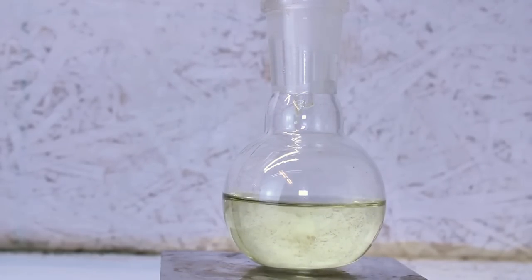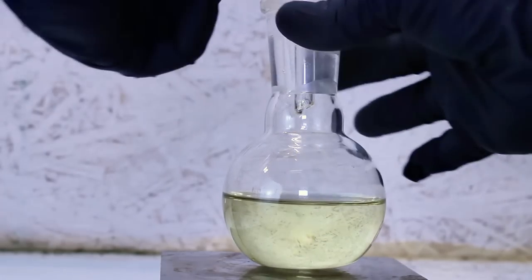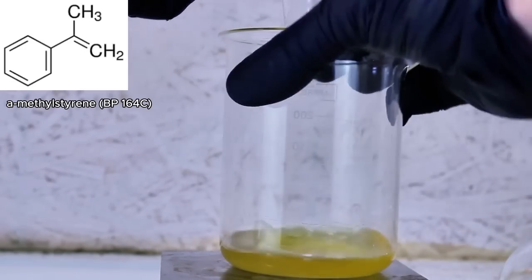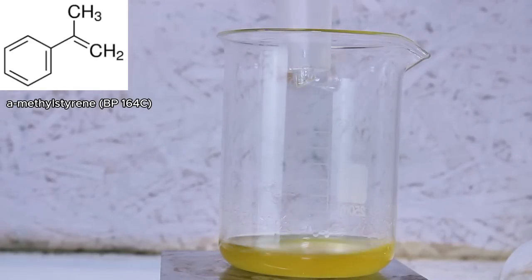This is important because at around 164 degrees celsius, the next waste product, alpha-methyl styrene, will begin to distill over, and you don't want that.